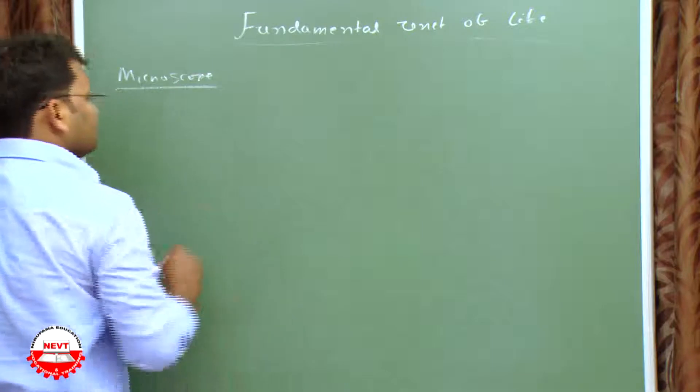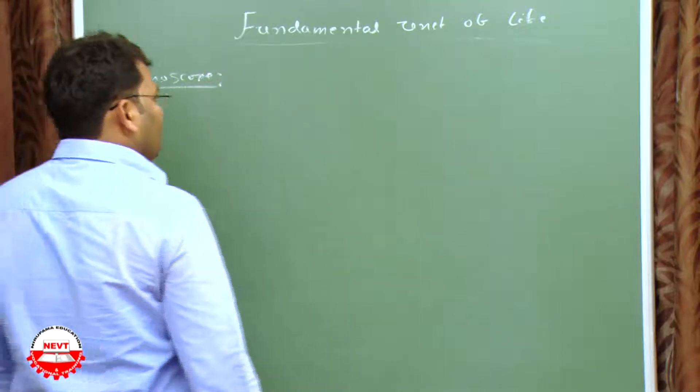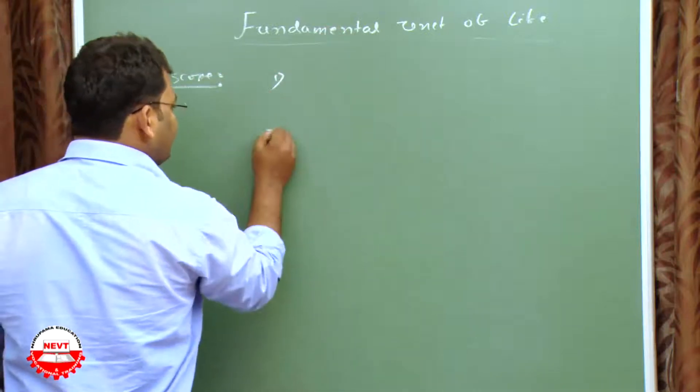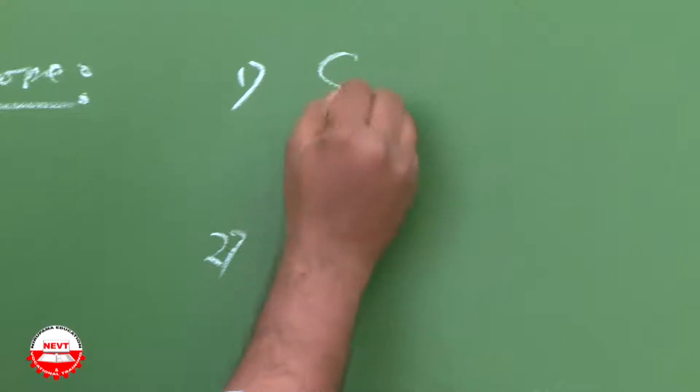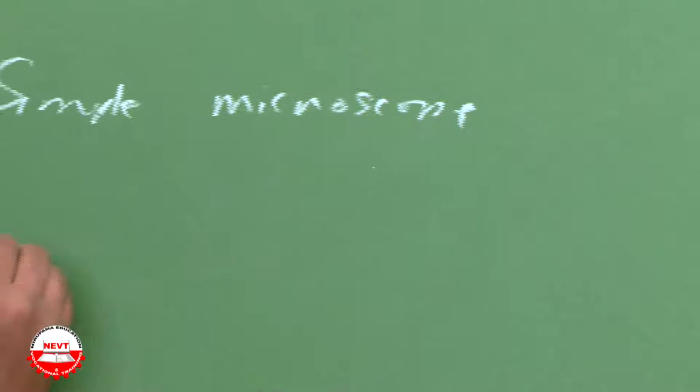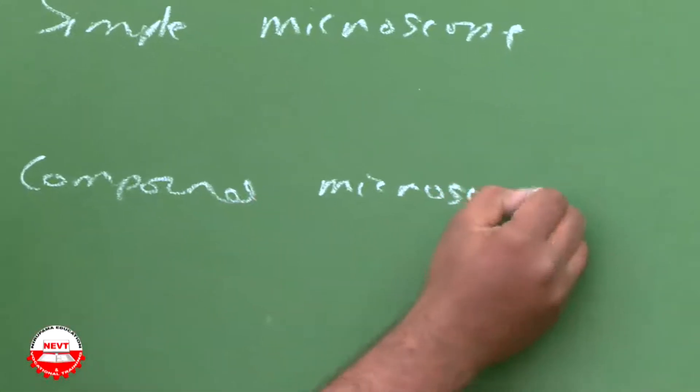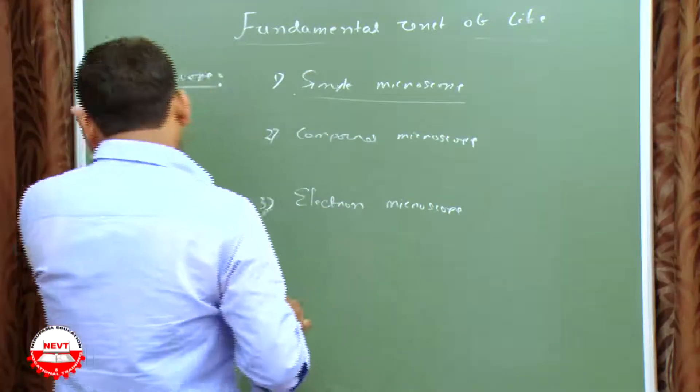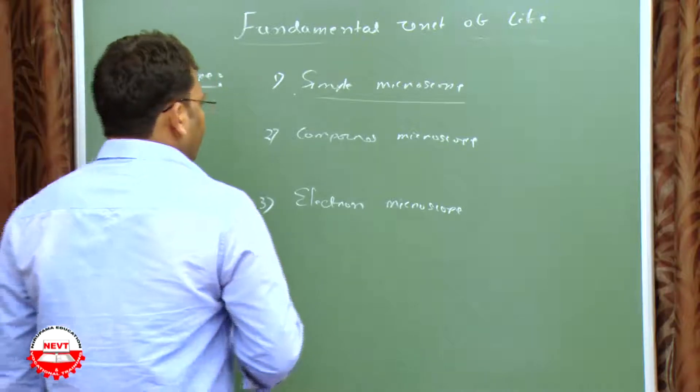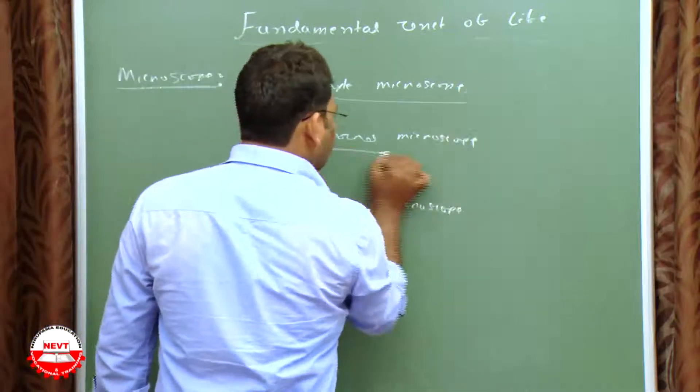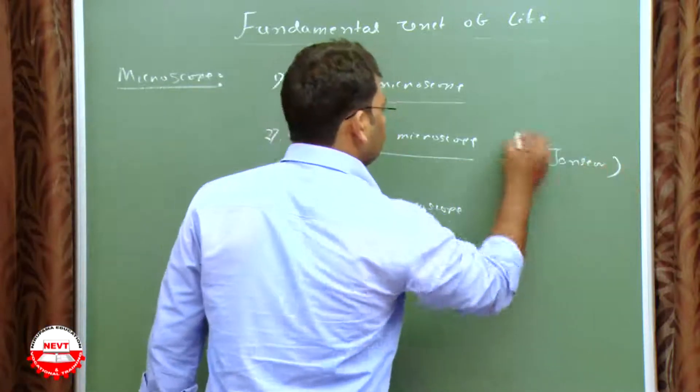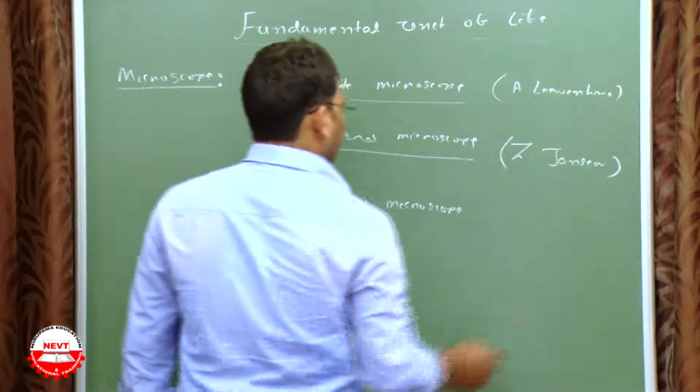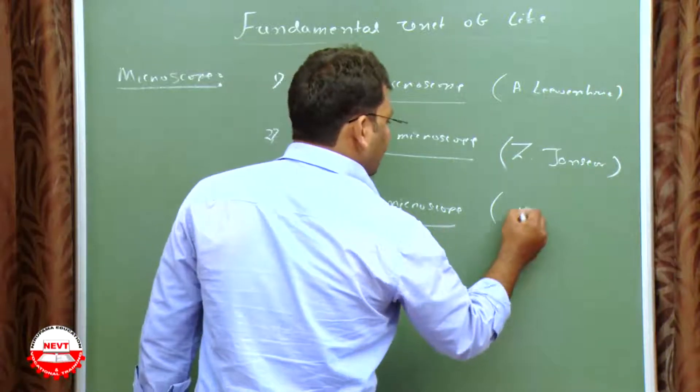Microscope was primitively discovered by few scientists. It is of three types basically: the old one is simple microscope, compound microscope, and electron microscope. Simple microscope was used by Robert Hooke. Compound microscope was discovered by Janssen and Antonie van Leeuwenhoek. Electron microscope was discovered by Knoll and Ruska.